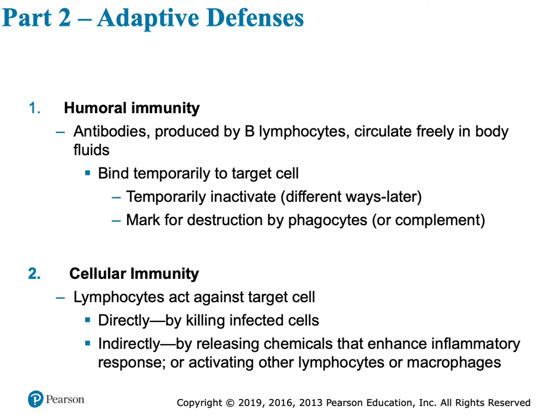Antibodies are not inside a cell — they're freely floating outside of cells in interstitial fluid, blood, lymph — any place that is not inside a cell. What they're going to do is bind to the target. If you had your flu vaccine and it was a great flu vaccine year, those antibodies go and grab hold of the cell infected with flu and deactivate it. Then the cell is marked to be destroyed — perhaps phagocytes come along and destroy it, or complement if it's bacteria, or sometimes we call on the T cell.